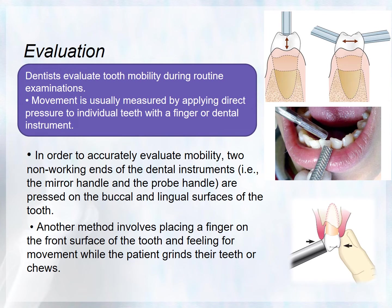For evaluation of tooth mobility during routine examination, movement can be measured by applying direct pressure to individual teeth with a finger or dental instrument. To accurately evaluate tooth mobility, two non-working ends of dental instruments can be used — the mirror handle and the probe handle — placed on the buccal and lingual surfaces of the tooth, as seen in the diagram.